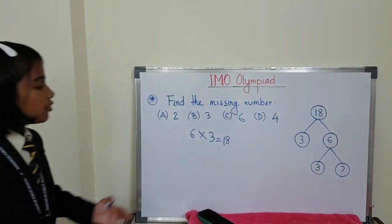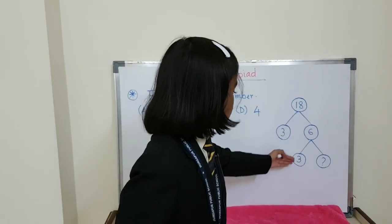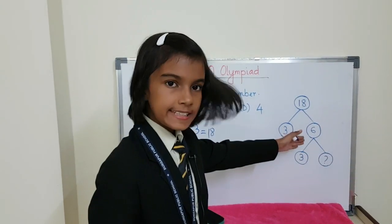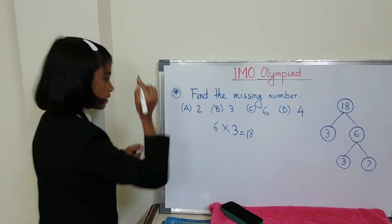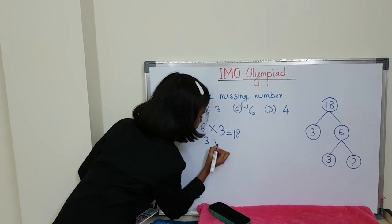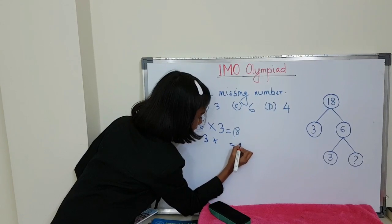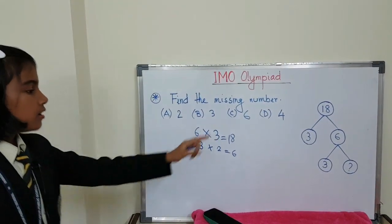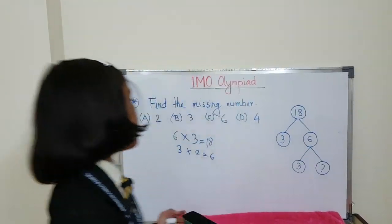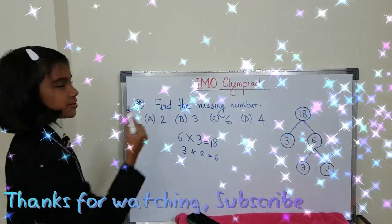So over here, what we have to do: 3 into how much is 6? We have to find the another factor. 3 into how much is 6? We have to find that one. So over here, 2 will be there. What is the answer? Answer is 2.